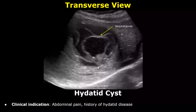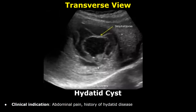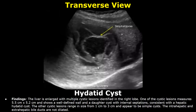This is a case of hydatid cyst. The clinical indication in this case is abdominal pain and history of hydatid disease. In the findings, the liver is enlarged and has multiple cystic lesions identified in the right lobe. One of the cysts has a size of 5.5 x 5.2 centimeters and shows a well-defined wall and a daughter cyst with internal septations. Such findings are consistent with a hydatid cyst.